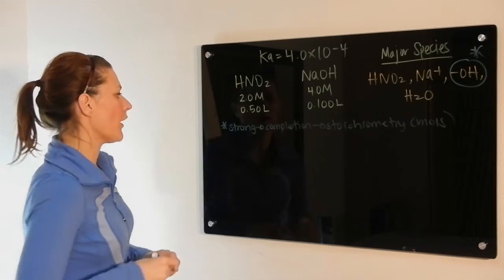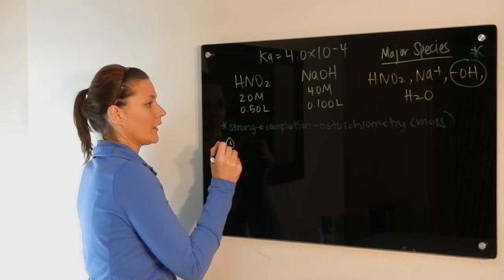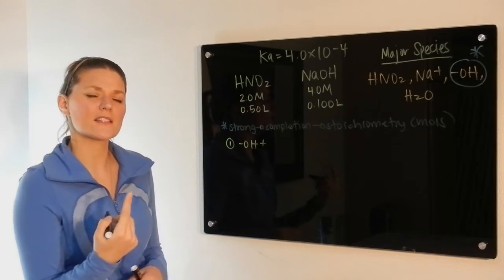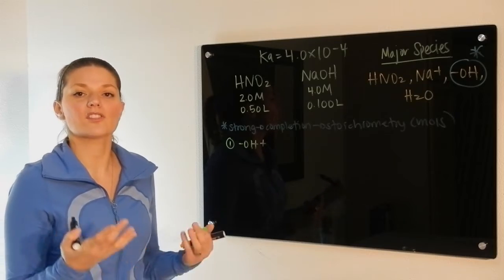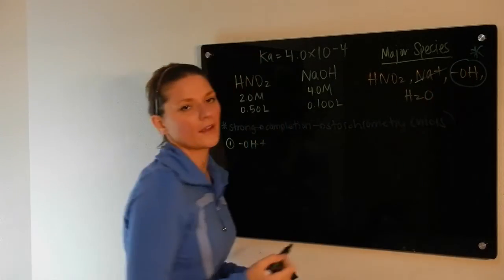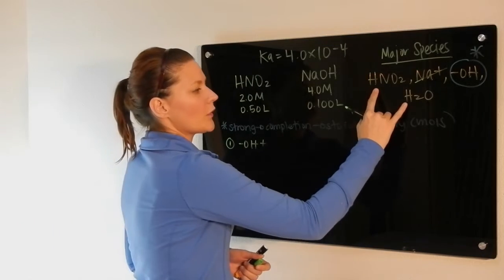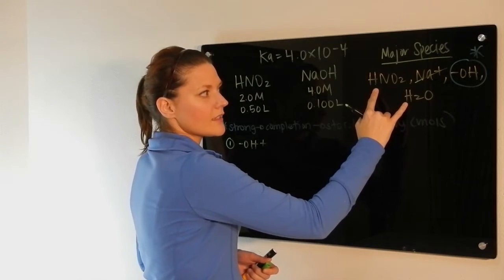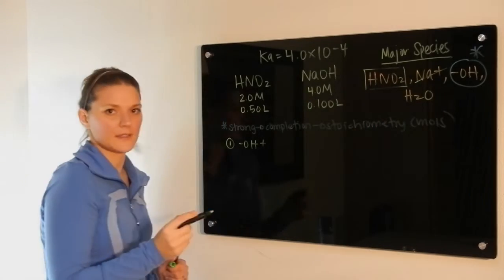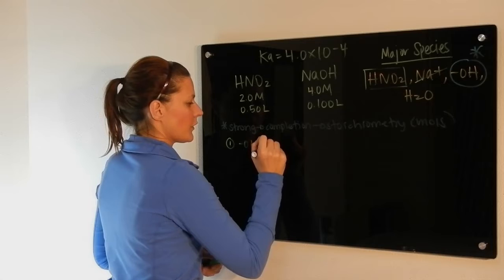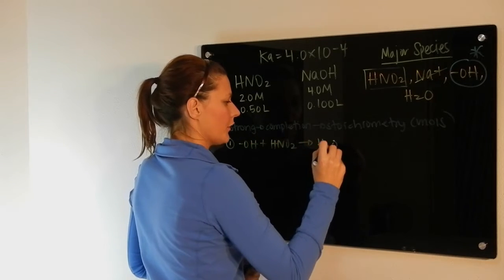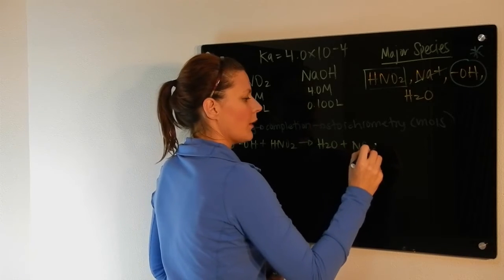So that would mean that step one calculation would be the hydroxide reacting with. So now you have to consider what is hydroxide going to react with. It's a strong base, so it wants an acid. Na-plus would not be a good candidate. So we're left with these two. Hydroxide is going to react with the best acid in solution, which would be your nitrous acid. So this will react with HNO2 to completion, forming water, and NO2-.